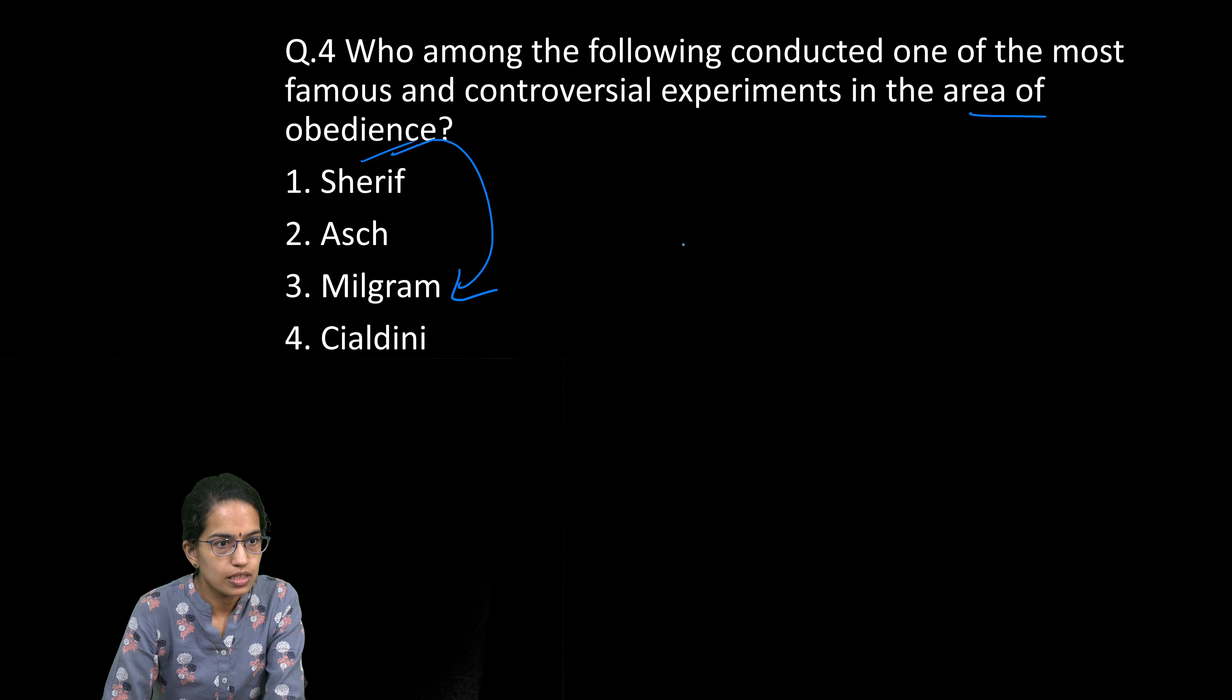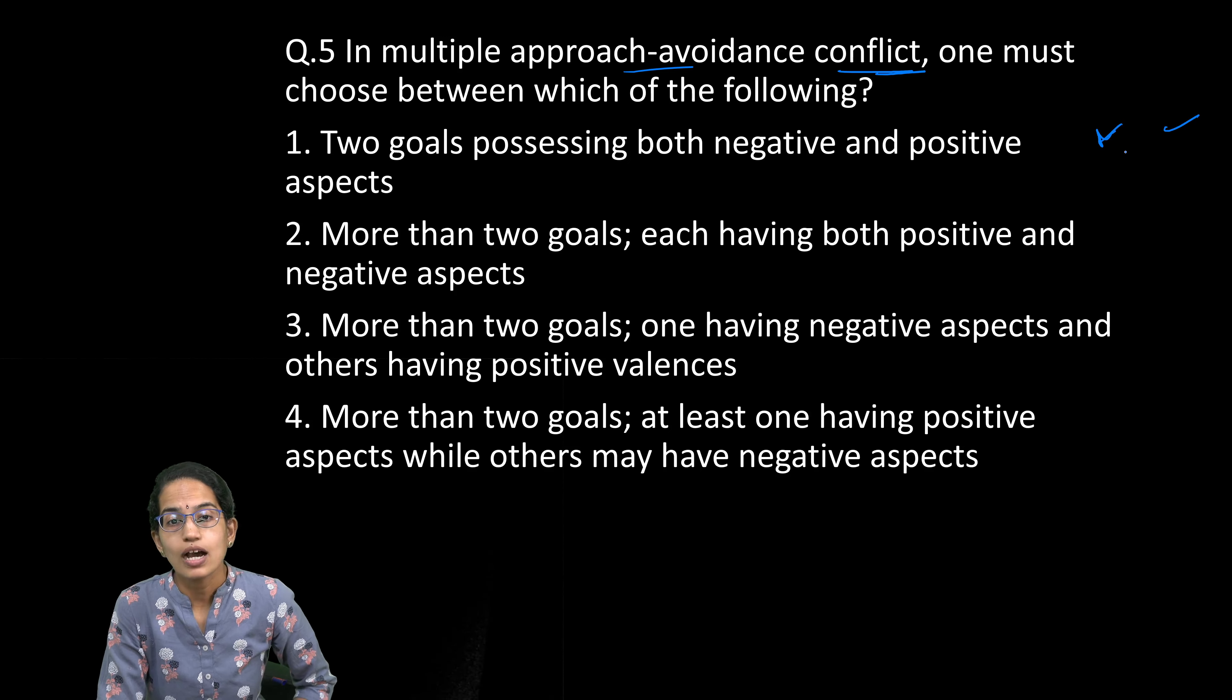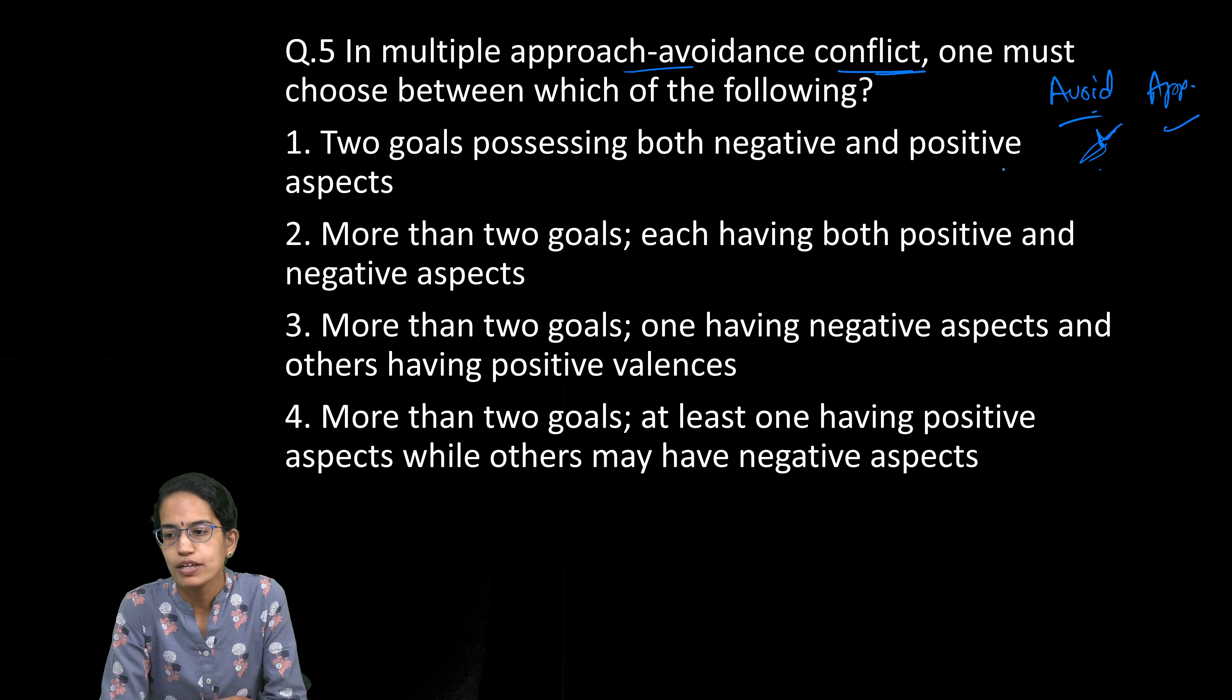The next question talks about multiple approach-avoidance conflict. What is approach-avoidance? I want to not attend the examination, but I want to attend the birthday party—this is approach-avoidance. Approach is the birthday party, but avoidance is not sitting for the examination. In either case, I'd have to do both. But what if there are multiple such cases?